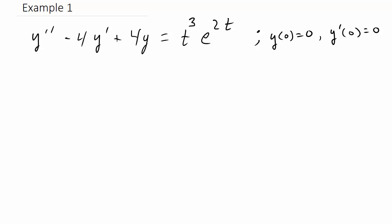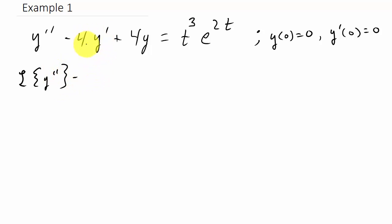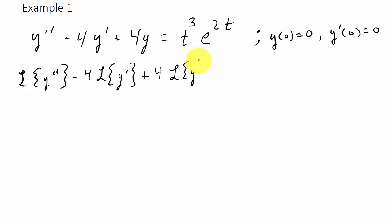Alright, let's take a look at solving a differential equation using Laplace transforms. We have our differential equation with conditions y(0) = 0 and y'(0) = 0. What we're going to do is take the Laplace transform of each term: the Laplace transform of y double prime, minus 4 times the Laplace transform of y prime, plus 4 times the Laplace transform of y, equals the Laplace transform of t cubed e to the 2t.